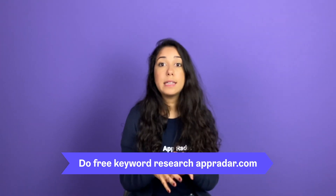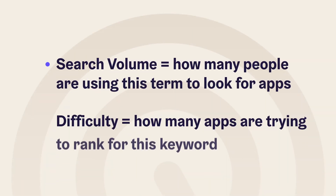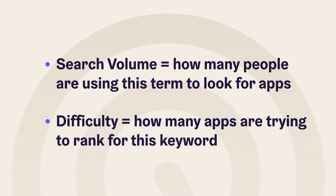You have to do some keyword research. Tools like AppRater will help you. You can see keywords that have a good search volume — meaning people are using that term to look for apps — but also where the difficulty level is not that high, meaning there are not that many apps ranking for those keywords, so it's possible for you to rank for them. These are the keywords you want for your app title: good search volume, low difficulty level. Of course, it's hard to find them, so you really have to do some research.